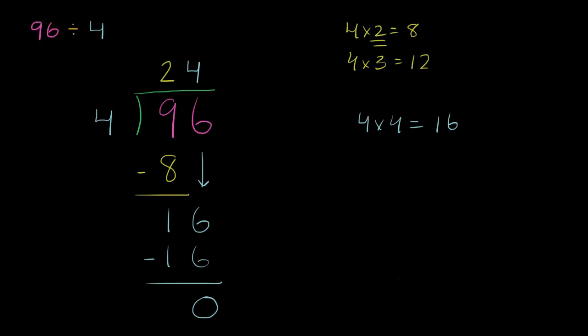And there we have our answer. I know it seems kind of magical at this point, but in a few seconds, we're going to think about why this actually worked. We got that 96 divided by 4 is equal to 24.